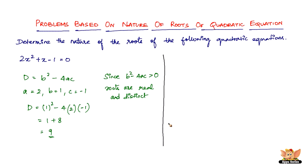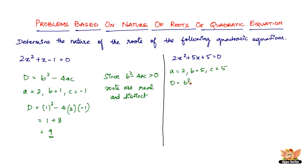Let's quickly solve another equation. We've got 2x squared plus 5x plus 5 equal to 0. Here we have a equals 2, b equals 5, and c equals 5 as well. So the discriminant equals b squared minus 4ac, and b is 5, so it's 5 squared minus 4 times 2 times 5.